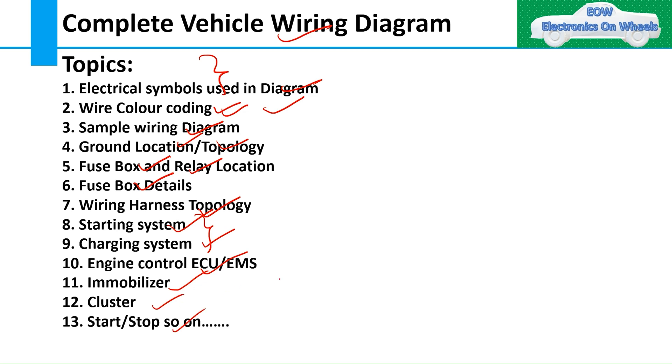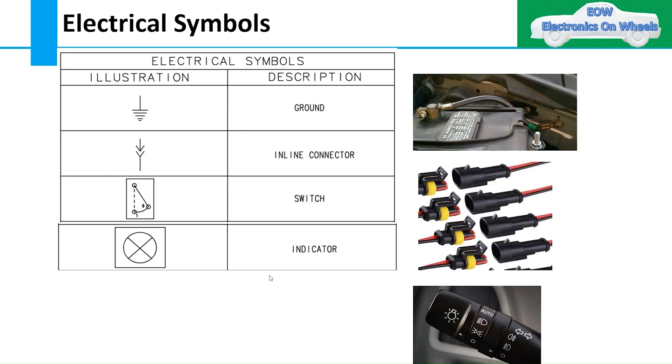Let's start first with electrical symbols. This is very basic, so those who are already aware can skip this, but those who want to understand all the symbols can continue. This is the ground symbol which we use, given on the body of the vehicle. This is how you represent it in the wiring diagram.